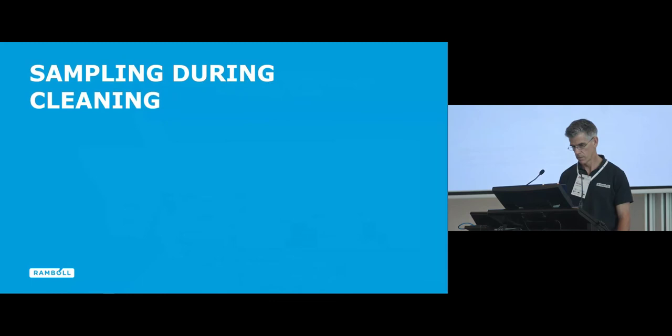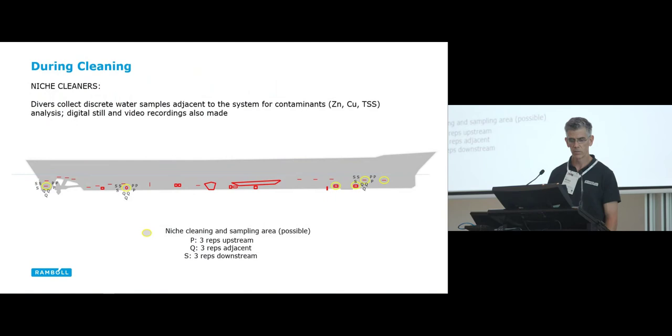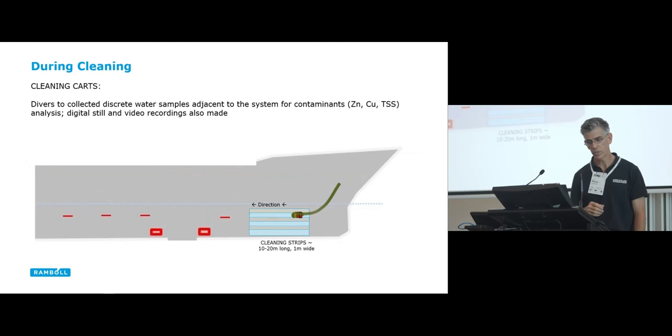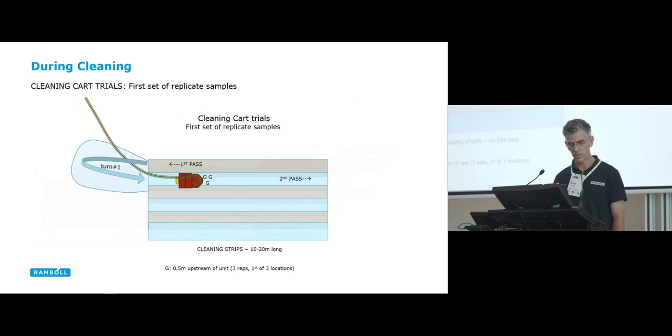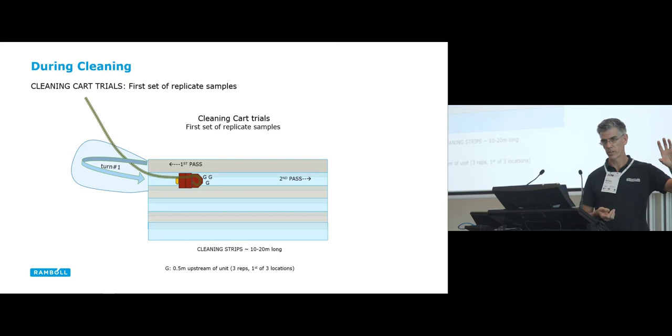So obviously the niche cleaners. We're looking at things like anodes or maybe transducers or something else you can't readily drive a cart across. So we're sampling very close within a half a meter upstream, downstream, and adjacent to the system itself. Also using cleaning carts for the planar hull surfaces. Divers are collecting discrete water samples adjacent to the system for contaminants, upstream, downstream, and adjacent. And we're also using digital stills and video recording.